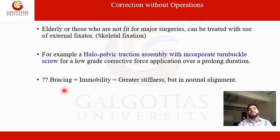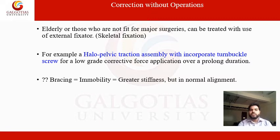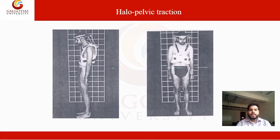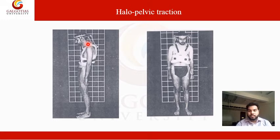Bracing will be used when immobility is needed — bracing produces immobility, which creates greater stiffness but in normal alignment. This is the picture of the halopelvic traction device, applied to the cervical and thoracic spine, enabling the patient to maintain an upright posture.